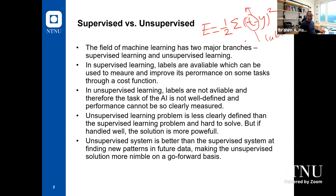For example, when you upload a picture to your Facebook or Google account, they can take the faces of people in each image and classify them. It will start tagging those faces using a bounding box, tagging the same person across all images. Once you give a label to one of those bounding boxes, the machine will recognize the same face in all other images and give it the same label. So it's unsupervised learning.